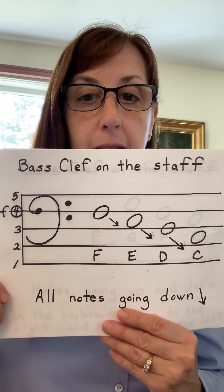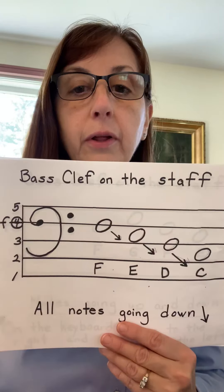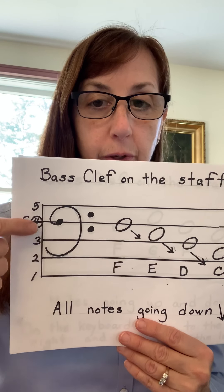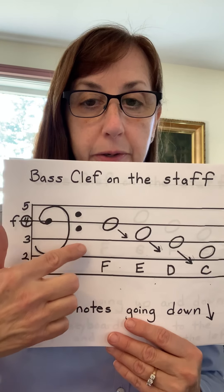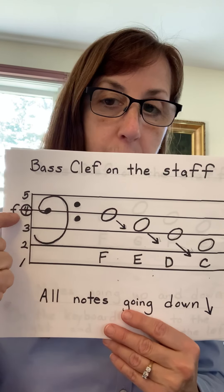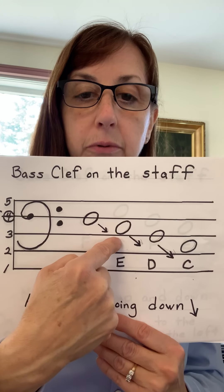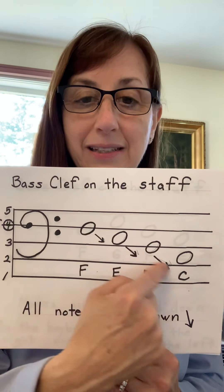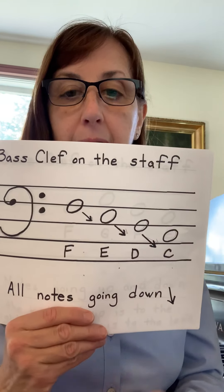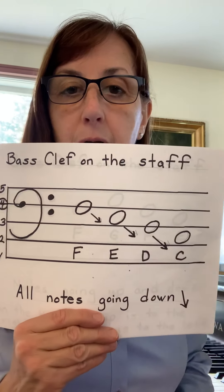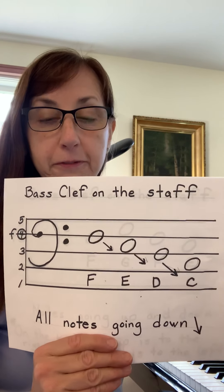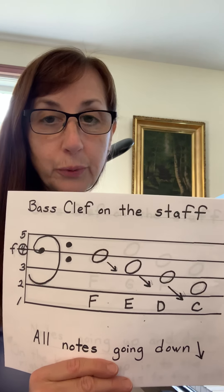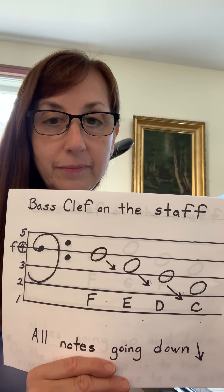Here we have our bass clef on the staff — the whole thing is called the bass staff. It has five lines, just like your hand, and four spaces. We drew our first note on the F line and went down a step, down a step, down a step. These are called seconds — an interval of a second. So take your left hand thumb and put it on the F — the first F to the left of center — and play these four notes: F, E, D, C.